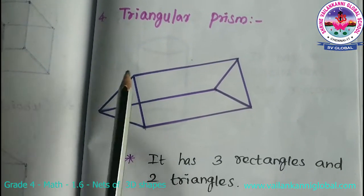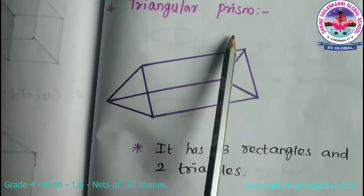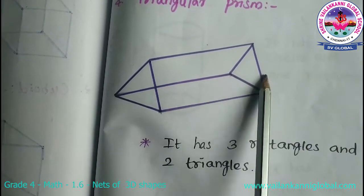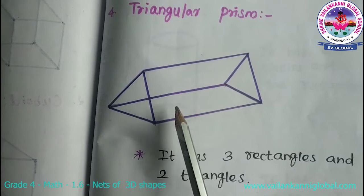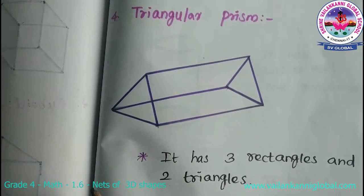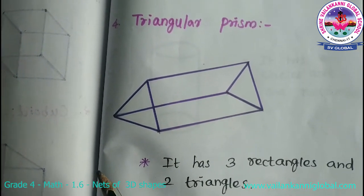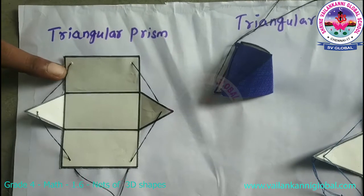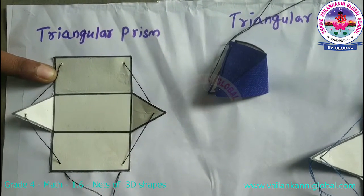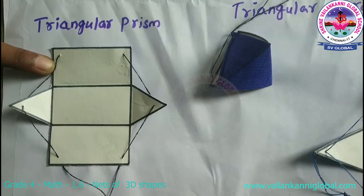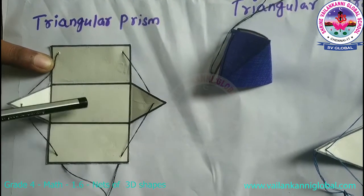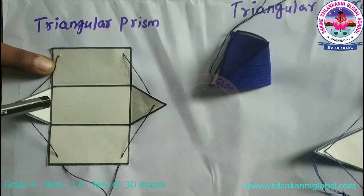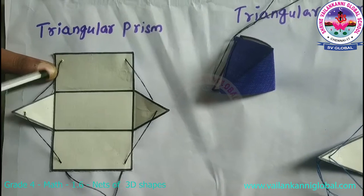The next one is triangular prism. For this triangular prism, it has two triangles as well as three rectangles. This is the net of triangular prism — three rectangles: one, two, three, and two triangles: one, two. Totally three rectangles and two triangles are there for triangular prism. Now we will make a 3D shape by using this net.